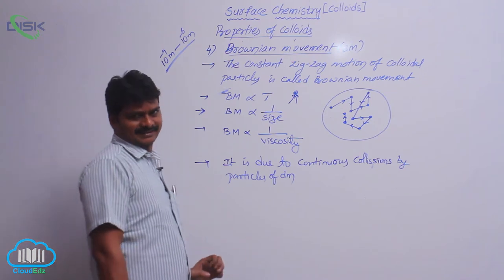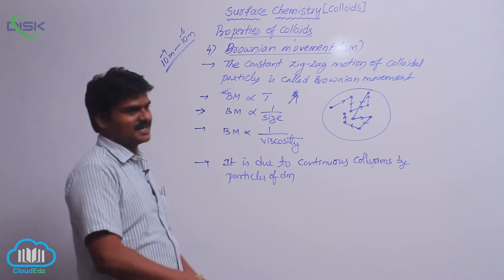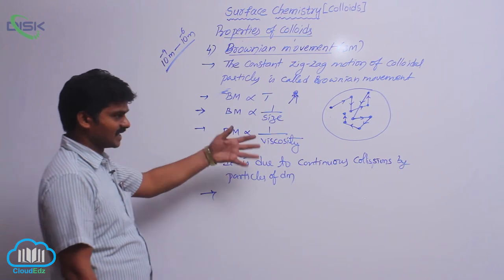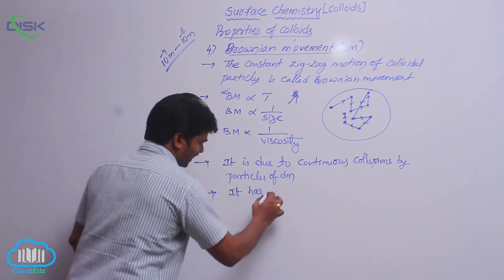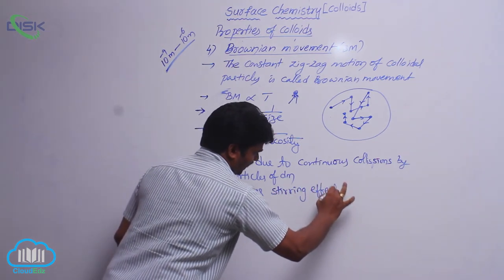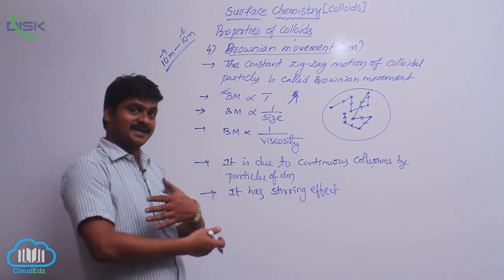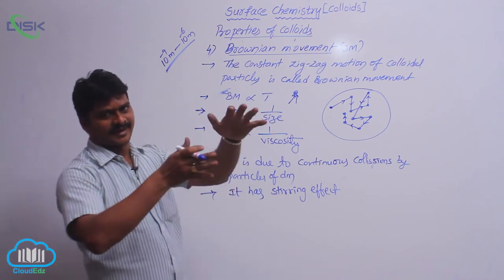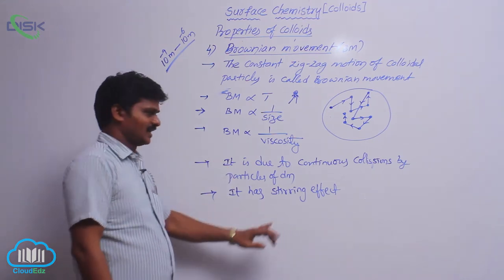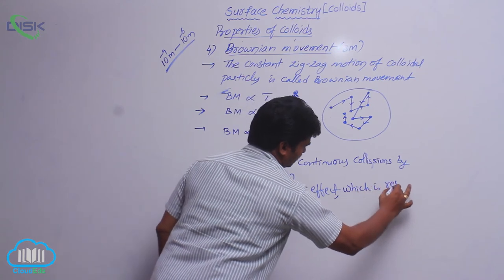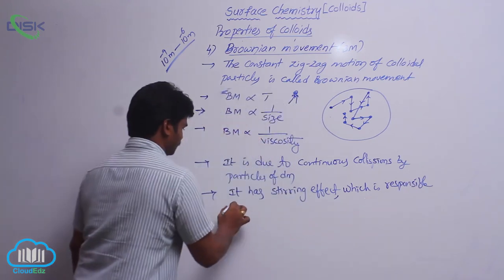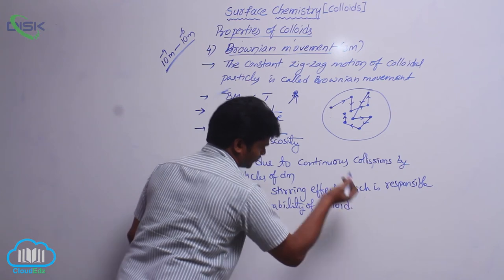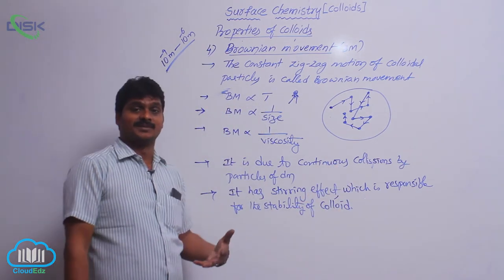Brownian movement leads to the stability of the colloidal solution — it has a stirring effect. Why is it a stirring effect? These collisions by the dispersion medium continuously change the direction of the colloidal particles. They move in different directions, causing a stirring effect, which is responsible for the stability of the colloidal solution.